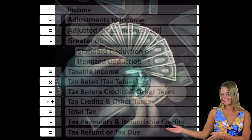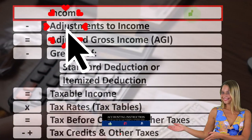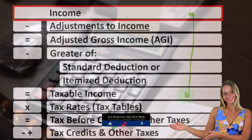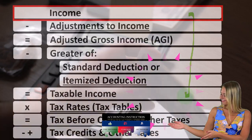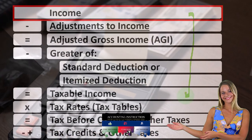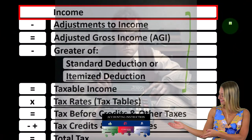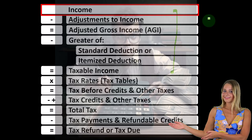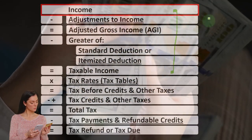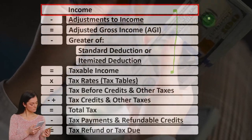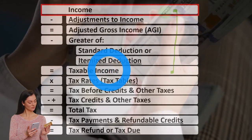Looking at the income tax formula, we're focused on line one income. The first half of the income tax formula is in essence an income statement, but just an outline or scaffolding, with other forms and schedules flowing into these lines. The Schedule C is one of them, being in essence an income statement in and of itself — income minus expenses or business deductions.